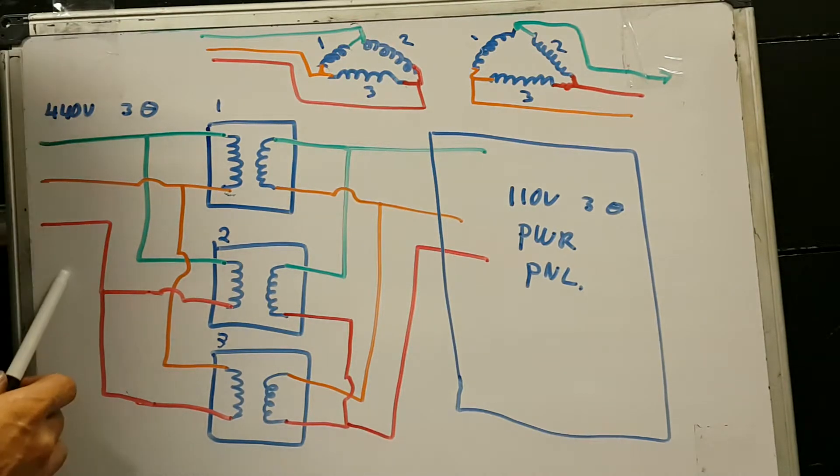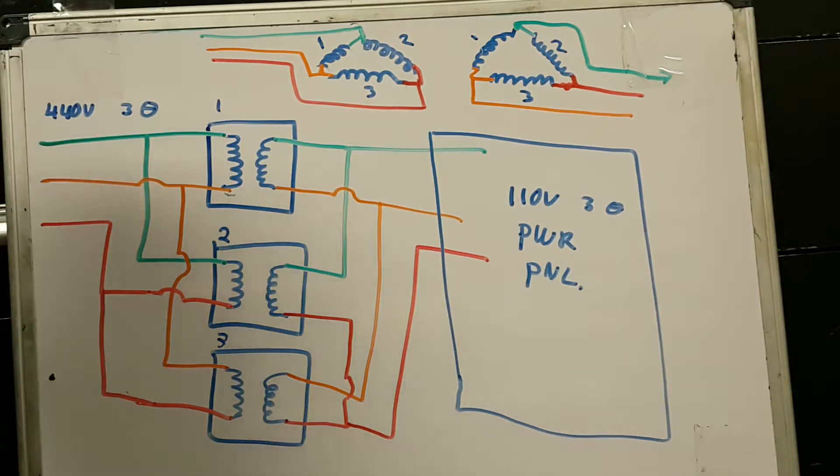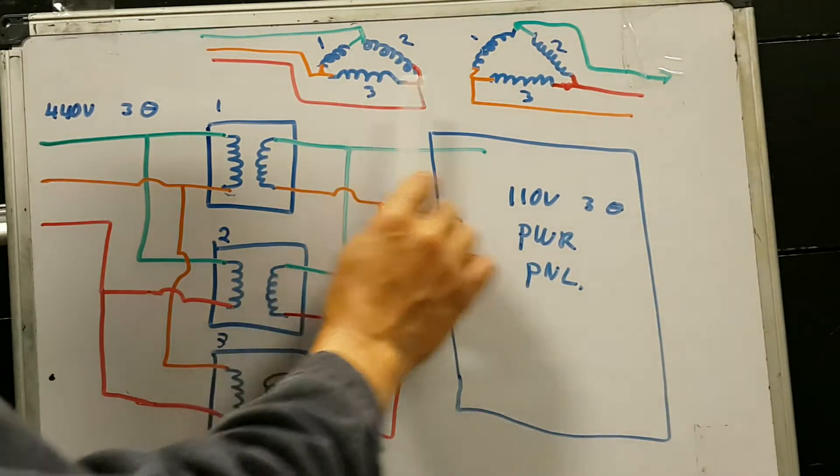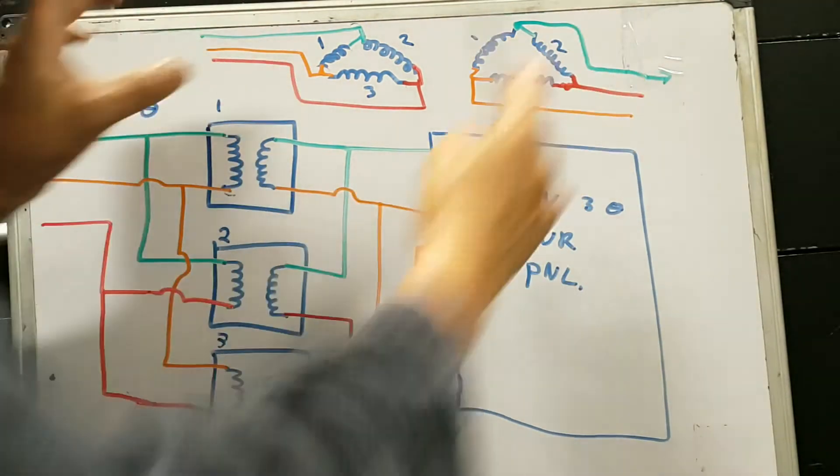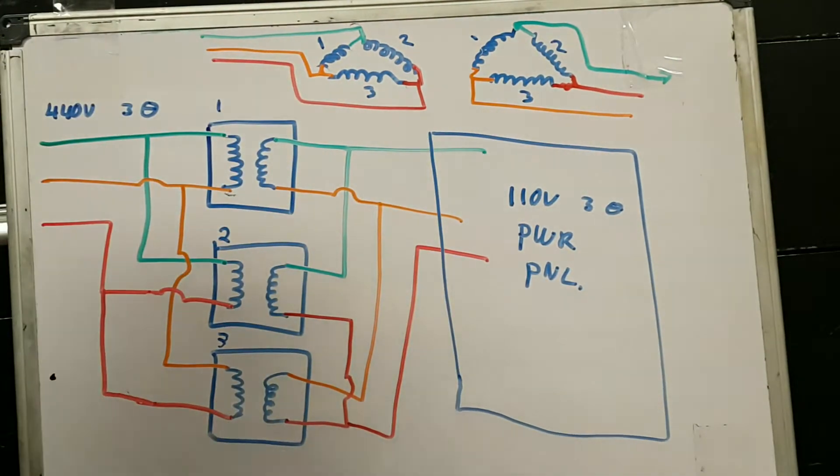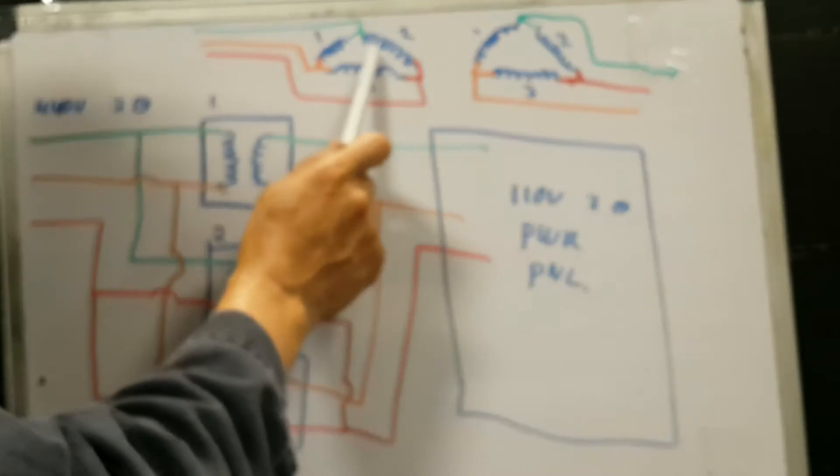So as you can see over here, we got three phases coming in, 440, and we got them connected to a delta-delta configuration of transformers. Here is a quick snapshot of these connections over here.